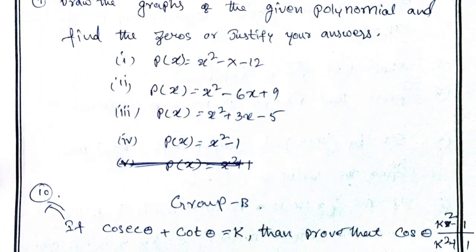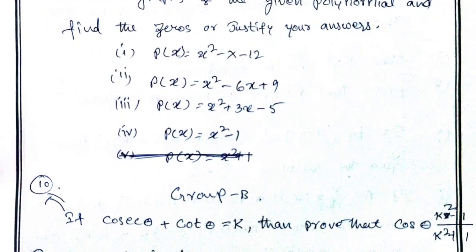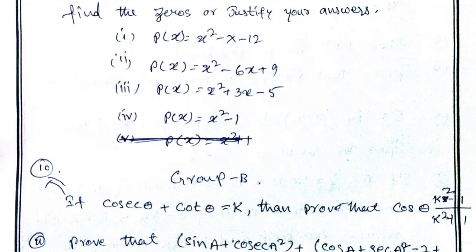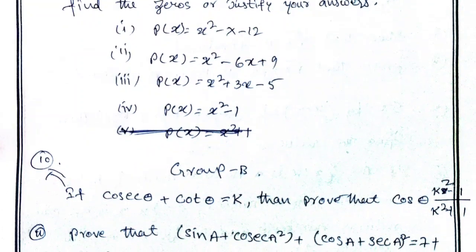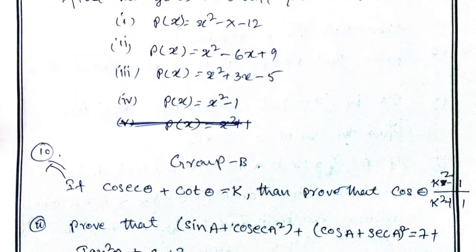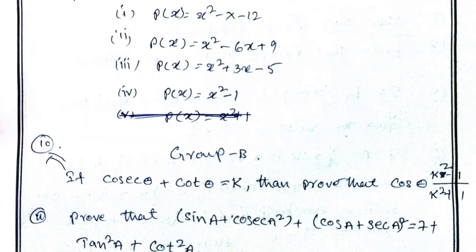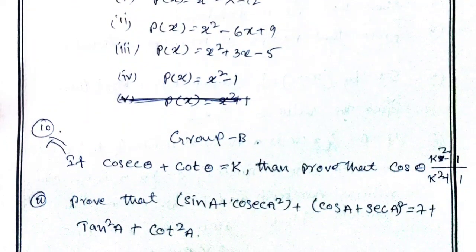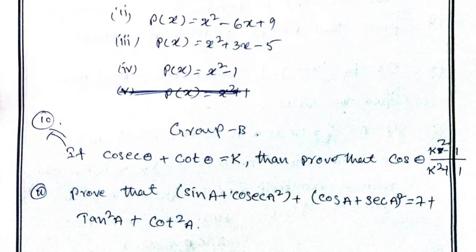You go for trigonometry. These two types of questions are very important. One, proving cos theta is equal to k square minus 1 by k square plus 1. Next, sin A plus cosecant A whole square plus cos A plus secant A whole square.